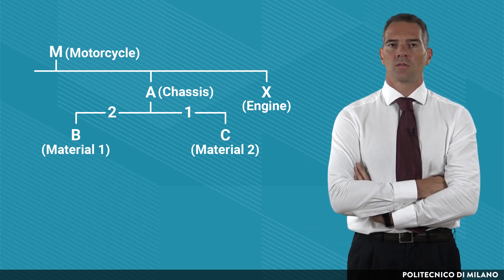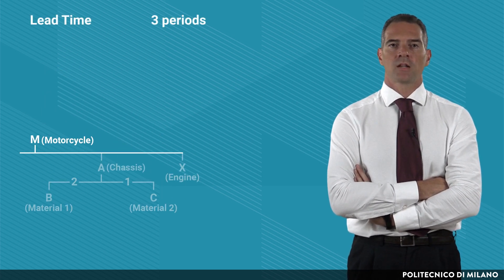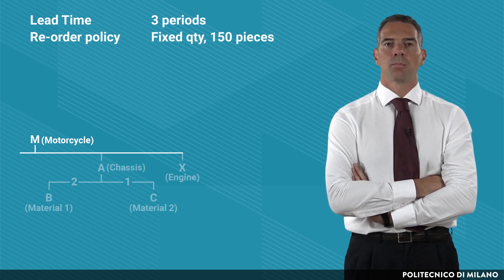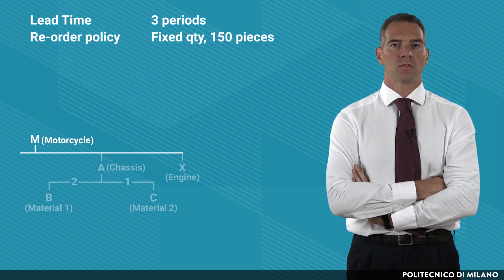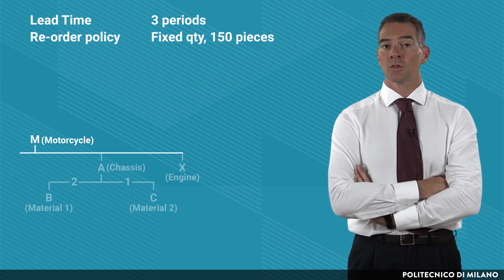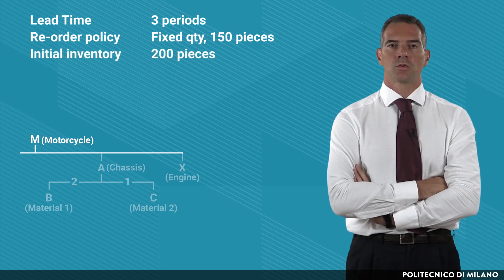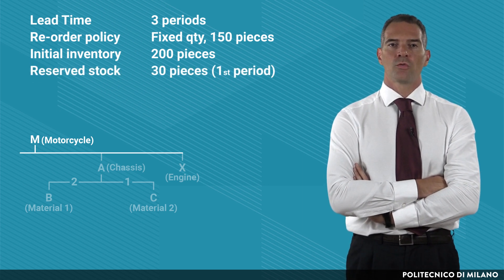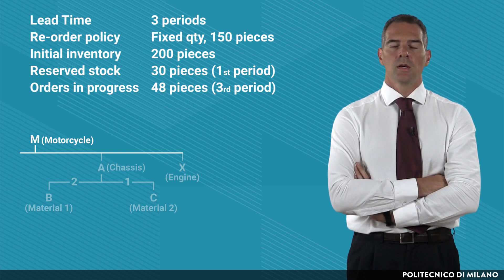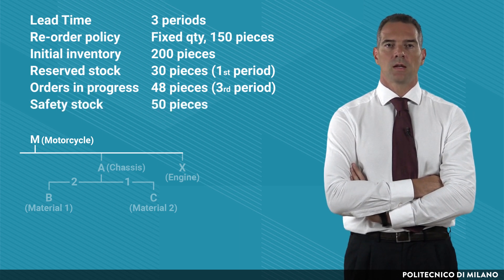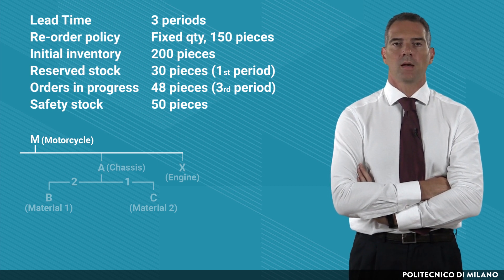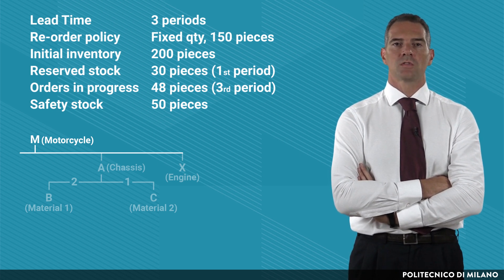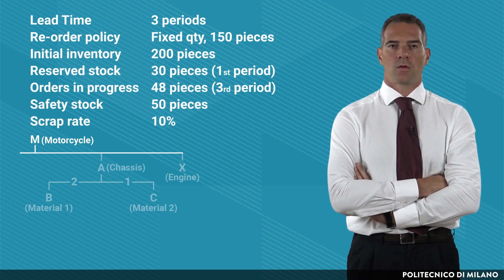We need additional data for item M: a manufacturing lead time of three periods, a lot sizing policy with a fixed quantity of 150 pieces per lot — which could derive from the economic order quantity — a starting inventory of 200 pieces with 30 reserved, plus 48 more pieces arriving in period 3, a safety stock of 50 pieces to cope with forecasting error or supply reliability, and a scrap rate of 10% in manufacturing.